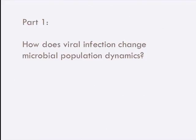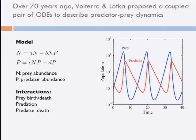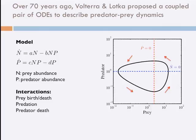Many years ago, Vito Volterra and Alfred Lotka independently proposed a system of ordinary differential equations to explain endogenous cycles of predators and prey. As many of you know, these cycles have a particular character: you have prey peaks which are followed by predator peaks, then prey decline, due to the decline of prey then predators decline, then prey increase, and the cycle repeats. These are the equations — the original model by Lotka and Volterra — which has some unusual features in that it's a conservative system with neutrally stable orbits.